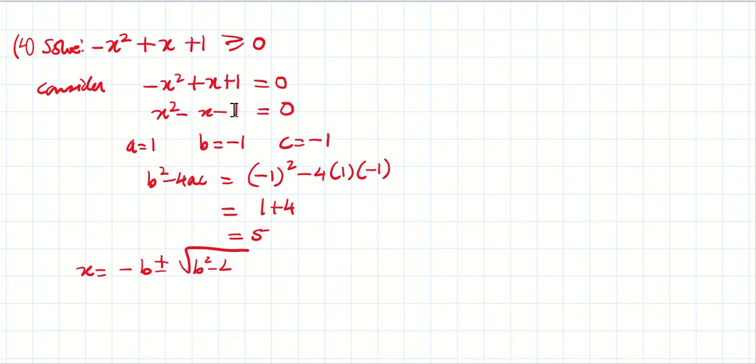I'll apply the formula. x = (-b ± √(b² - 4ac))/2a. Substituting, -(-1) ± √5 over 2(1). So your x = (1 ± √5)/2.